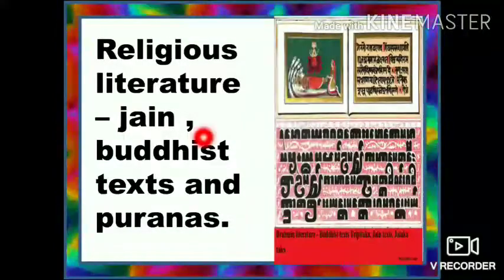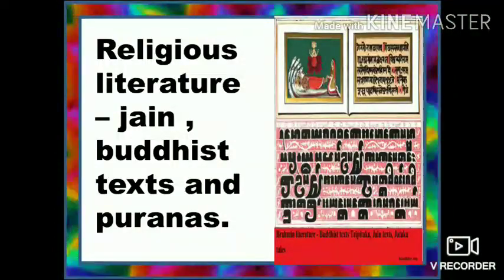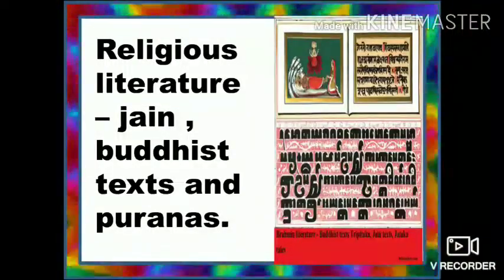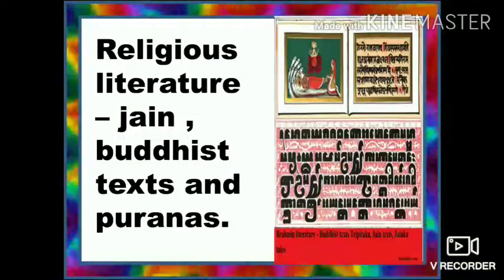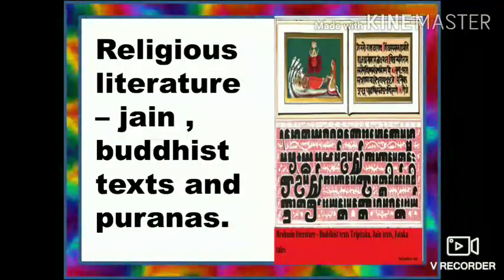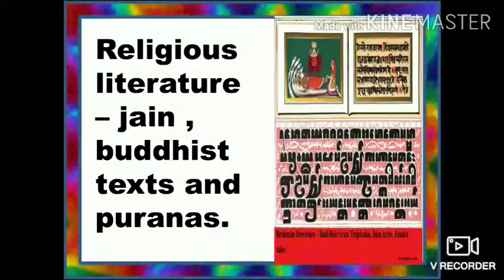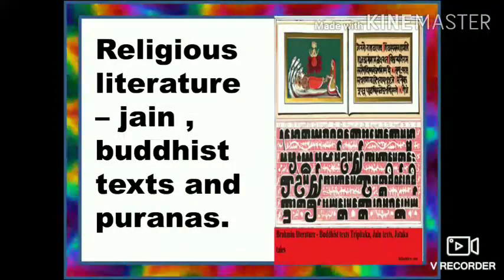Under religious literature, we have Jain Buddhist texts and Puranas. Buddhist texts such as Jatakas reveal socio-economic conditions of the Mauryan period. In the last unit you also learnt one of the Jatakas stories, The Woodpecker and the Lion. The Jatakas are popular stories about the previous birth and life of Buddha as human and as an animal. They teach morals. Puranas reveal the list of Mauryan kings and the chronology.